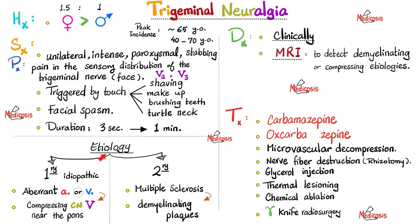Trigeminal neuralgia can be divided into primary and secondary. Primary is idiopathic — one hypothesis suggests an aberrant artery or vein compressing the trigeminal nerve near the pons. Secondary trigeminal neuralgia is secondary to something else, such as multiple sclerosis with its demyelinating plaques. Diagnosis is made clinically. If we suspect multiple sclerosis or a compressing pathology, we can do an MRI.